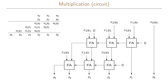Here we can see the resulting circuit. The first part corresponds to the rightmost column, which is just x0·y0. The next part of the circuit sums x1·y0 and x0·y1 — there is no carry coming in here, so this directly gives us z1.